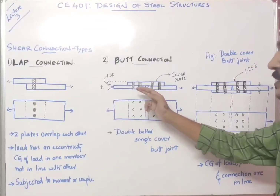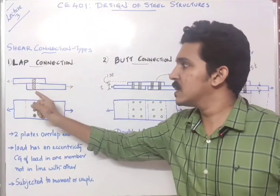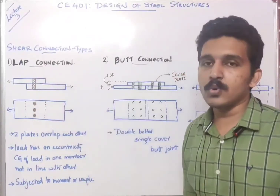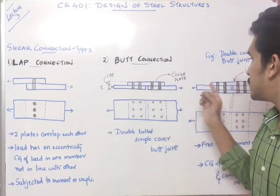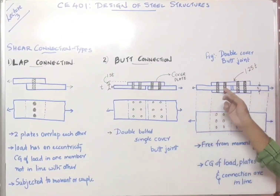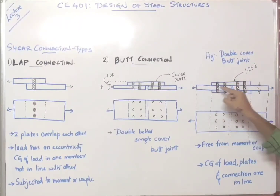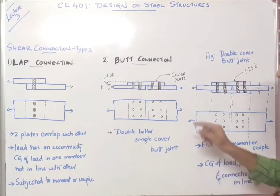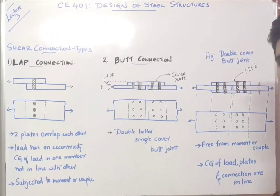The force experienced here is shear — that is, the force experienced by the connection at the bolt is a tangential force. In the double cover butt joint, the additional advantage is that since all the plates are arranged in the same line and the load is also acting in the same line, there is no couple or moment acting on it. Therefore, the double cover butt joint is preferred over the lap joint.